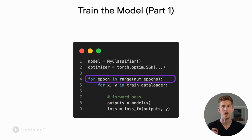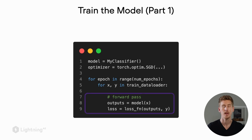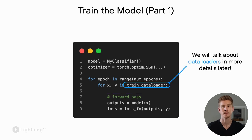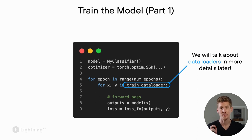Similar to what we saw in the mini-batch gradient descent video, we iterate over the training epochs. For each data point in the training epoch, we compute the model output and compute the loss. We have a training data loader which produces the mini-batches for us — we will cover this in more detail later.